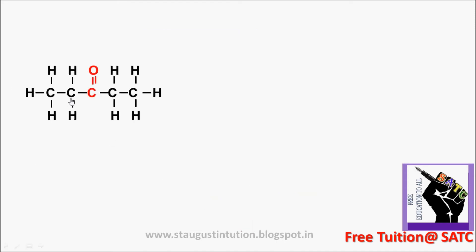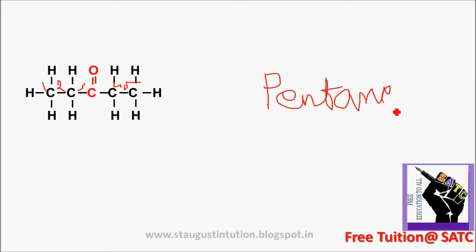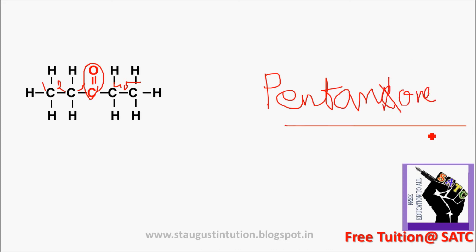Next structure: carbons 1, 2, 3, 4, 5 - five carbons, so the word root is PENT. Single bond gives ANE. The C=O ketone gives suffix ONE. Drop E here. The answer is PENTANONE.